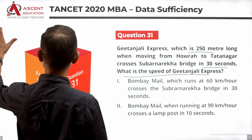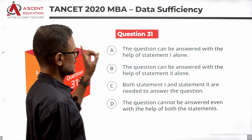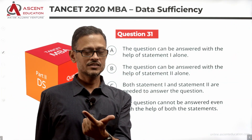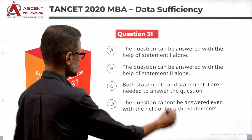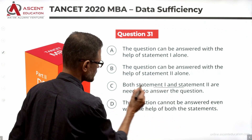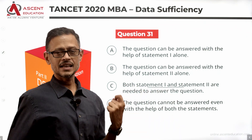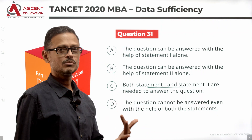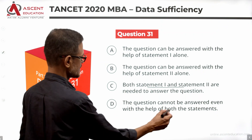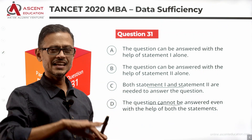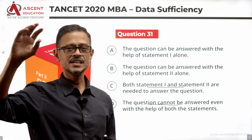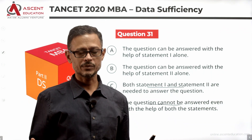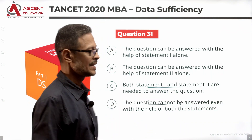We have four answer options. Statement 1 alone is sufficient — answer A. Statement 2 alone is sufficient — answer B. Together they are sufficient — answer C. The data is insufficient — answer D. These are the same four answer options as found in the other 2020 questions. Let's find out the speed of Geetanjali Express.